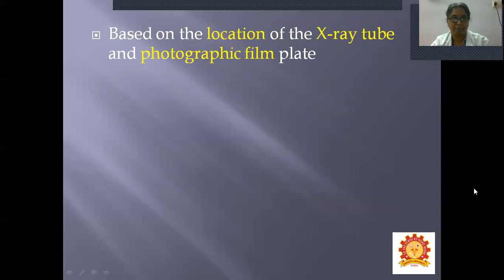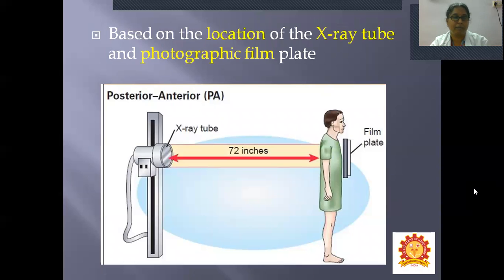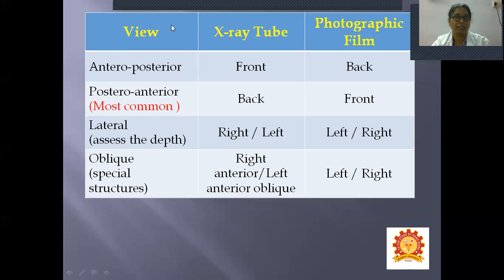What are the standard views in which X-rays are taken? Based on the location of the X-ray tube and the photographic film plate: the postero-anterior view is the standard view, where the X-ray tube is on the posterior aspect and the photographic film is anterior to the patient. The antero-posterior view means the X-ray tube is in front and the photographic film is at the back. The postero-anterior view is the most common view taken.